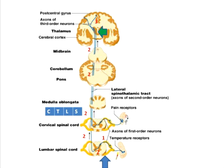Within the spinal cord, the fibers are arranged in a specific way, shown as CTLS. C represents the cervical fibers and T represents the thoracic fibers.